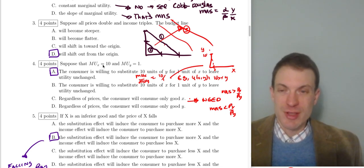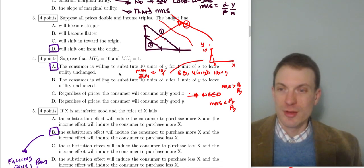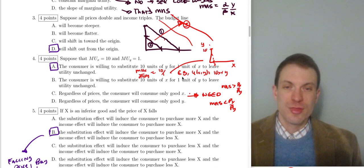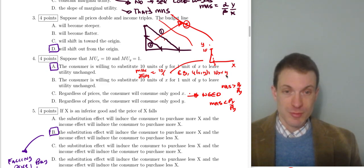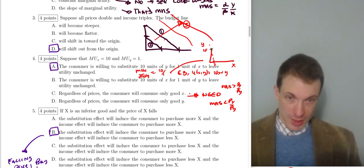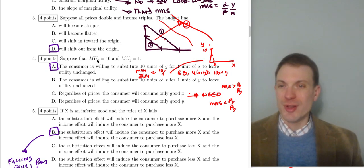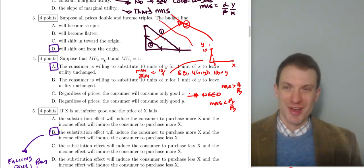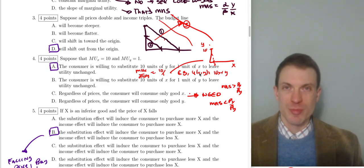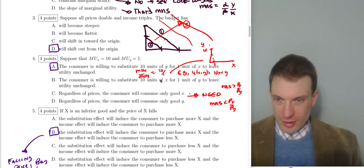Question four: suppose the marginal utility of x is 10 and the marginal utility of y is 1. The interpretation is that the consumer is willing to substitute 10 units of y for one unit of x, leaving utility unchanged. MUx/MUy = 10/1. Think of a perfect substitutes utility function — the marginal utility of x is the coefficient on x and marginal utility of y is the coefficient on y. This gives rise to downward-sloping indifference curves with a slope of 10, meaning you're willing to give up 10 units of y for one unit of x.